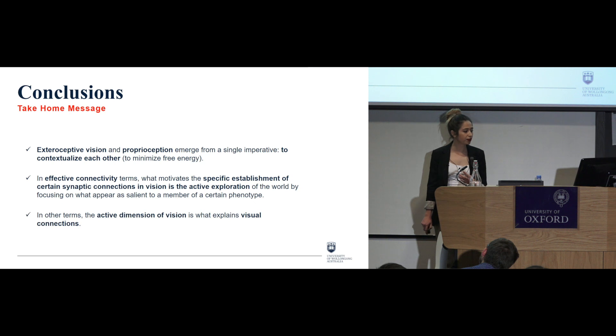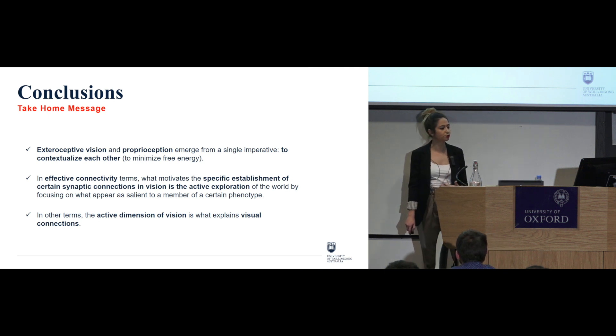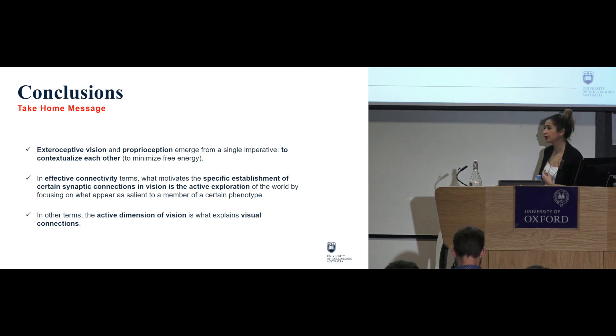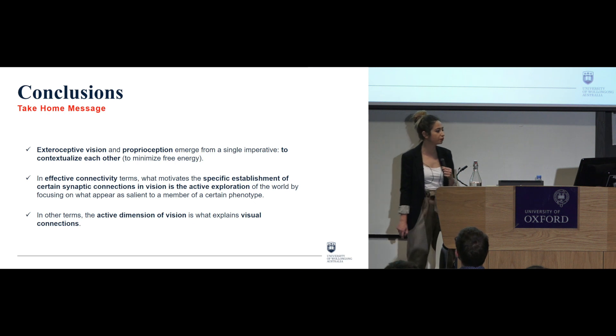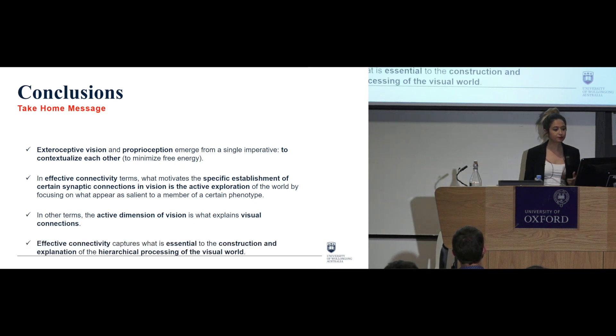Now in other terms this means that active inference, the active dimension of vision is what explains these visual connections. So which means that we're not just simply collecting or picking out what we see in the world, there is an active dimension to it. Now finally the effective connectivity captures what is essential to the construction and explanation of the hierarchical process in the visual world.